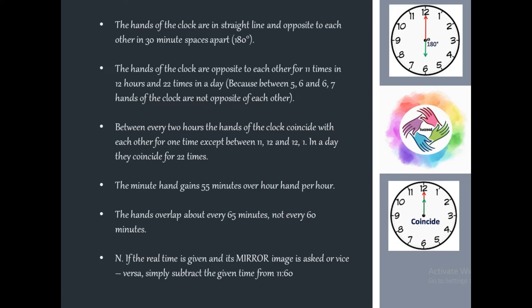The minute hand gains 55 minutes over the hour hand per hour. In one hour, the hour hand moves only 5 minutes while the minute hand moves 60 minutes. Therefore, the hands overlap approximately every 65 minutes, not every 60 minutes.